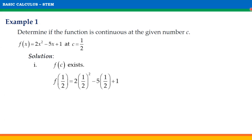Hence, f(1/2) = 2(1/2)² − 5(1/2) + 1. Simplifying, we get 1/2 − 5/2 + 1, which equals −1. Since f(1/2) = −1, it means that C defines a value and f(C) exists.